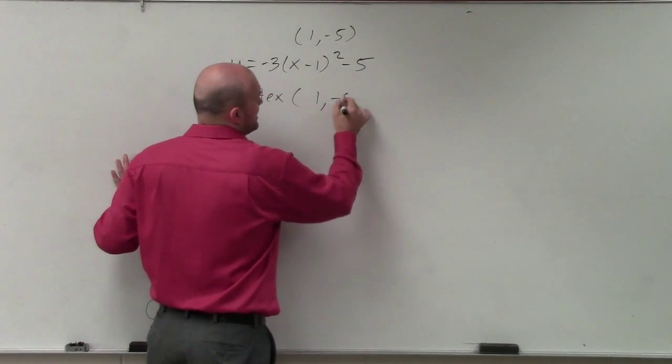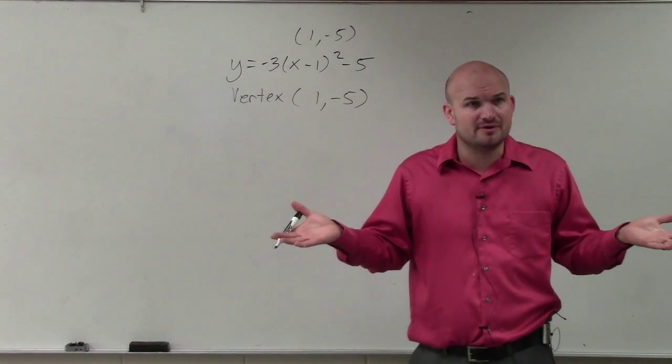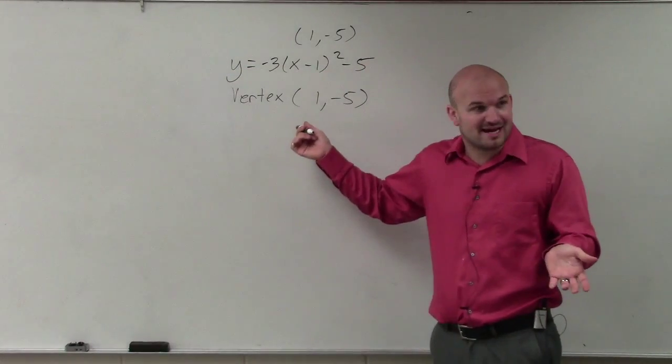The vertex in this case is (1, -5). So is that point on the graph? Yeah, of course it is. It's actually the vertex.